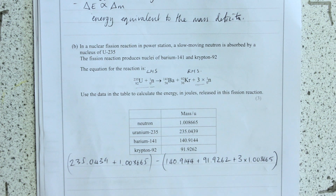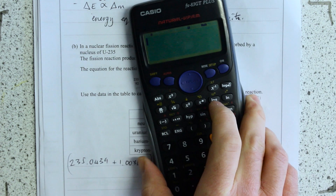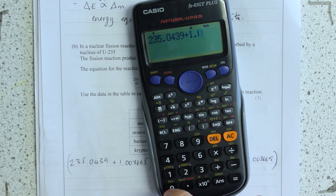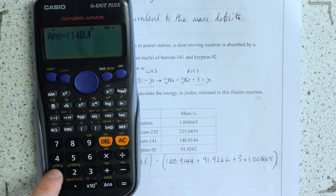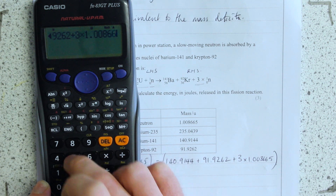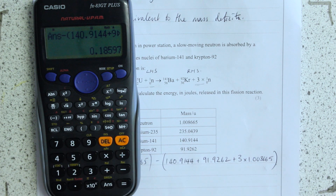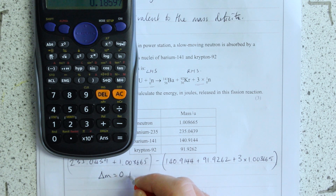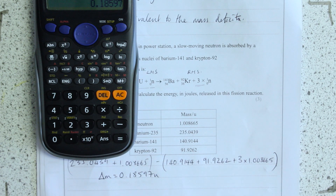I suggest you write all of that out because it tells the examiner what you're doing — there might be some credit for that. So my mass deficit in u is 0.18597. That's fine — that's actually got me a mark. So now I need to convert that into kilograms.